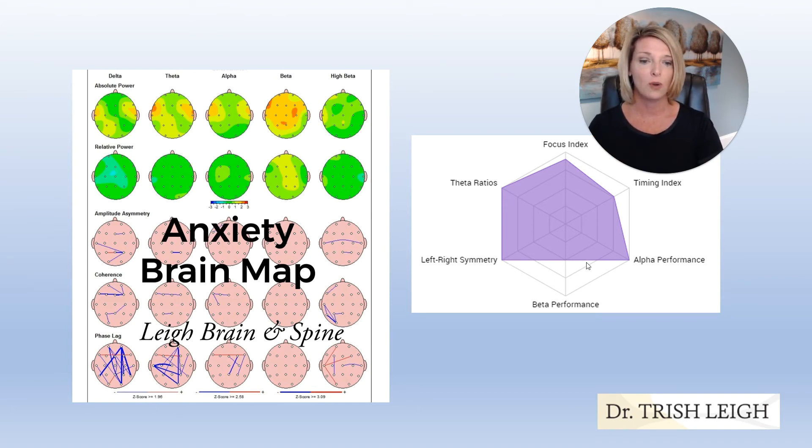Your beta performance would be struggling because you're using too much beta. Your brain is not calm and focused - it's hypervigilant, it's on overdrive. There's too much fast speed being used, and it would show up looking like this on your brain performance spider web.